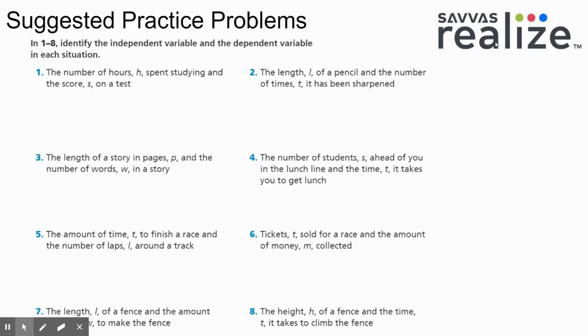Today's suggested practice problems. I realize you can't actually read number seven, so ignore number seven. You have eight problems. It's the same thing that we did in the example and in the you do. You have two variables. You have to figure out which one's independent and which one's dependent. The nice thing is you don't have to explain these ones. Just make sure you understand why you chose the ones you did.